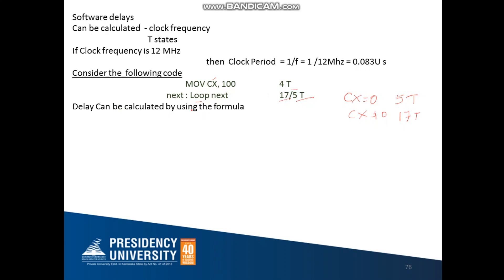In order to calculate the delay, we use the following formula: Total Delay = CT × clock period, where CT is the total number of clock cycles in the code. To execute the MOV instruction once takes 4 clock cycles. To execute the loop instruction once takes 17 T-states. If executed 2 times, that is 17×2; 3 times, 17×3. Since I am executing it 100 times, this instruction takes 17×100 clock cycles, plus 5 T-states for the final exit from the loop.